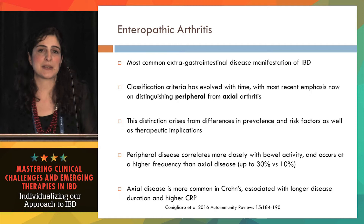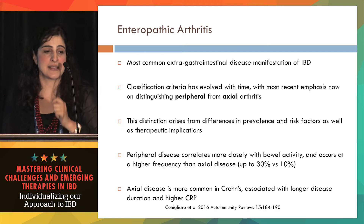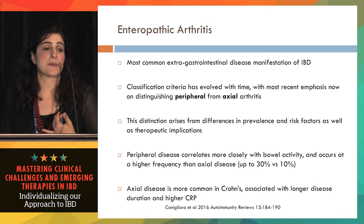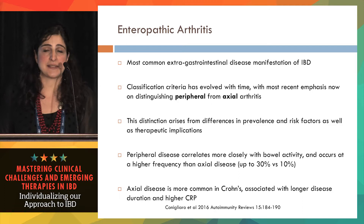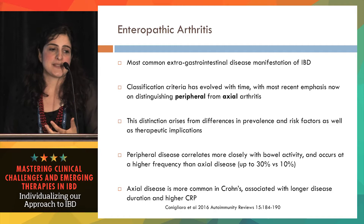The classification now is much simpler. When we think about enteropathic arthritis, the first question we ask is: is it peripheral or is it axial? By axial, we mean does it involve the spine? This distinction tells us more about prevalence, risk factors, and treatment implications than the old criteria.